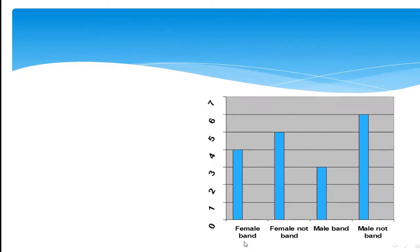Now I am comparing different groups: females who are in the band, females not in the band, males in the band, and males not in the band. Those who are not wearing a band are in the group of 'not band.' So how can we compare here?